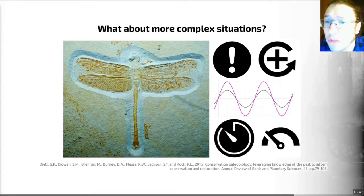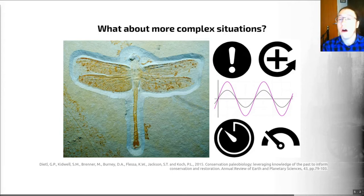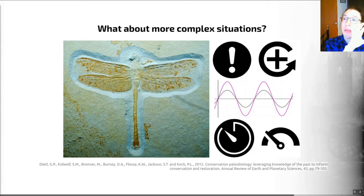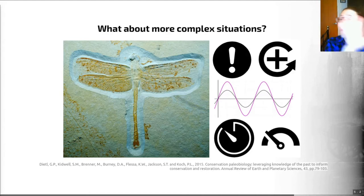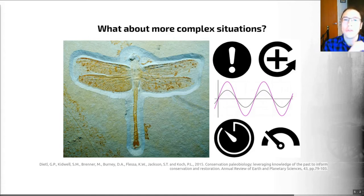I have to start with some bad news. Interactions among multiple stressors are thought to lead to very different biological outcomes than single stressors have. So we can't just look at a series of single stressors and assume that the impact of each one applied alone will be the same as three, four, or five of those applied together. As such, we do need to understand how stressors interact with one another across relevant timescales to the conservation issues that we're interested in dealing with.